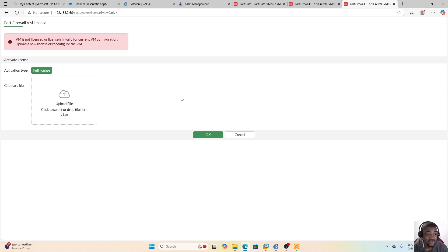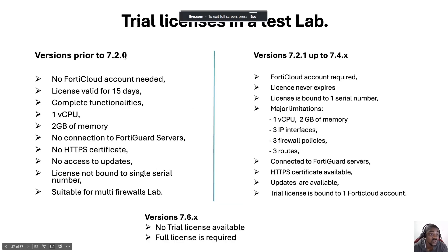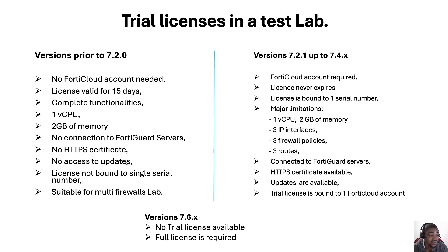To summarize: for version 7.2.0 and prior, you don't need any FortiCloud account. The license is limited to 15 days, but you have complete functionality with the constraints of one vCPU and 2 GB of RAM. There is no connection to FortiGuard servers, no HTTPS certificate, and no access to updates. The license is not bound to a single serial number, making it suitable for multi-firewall testing deployments.